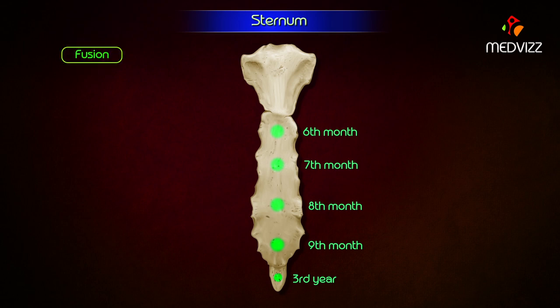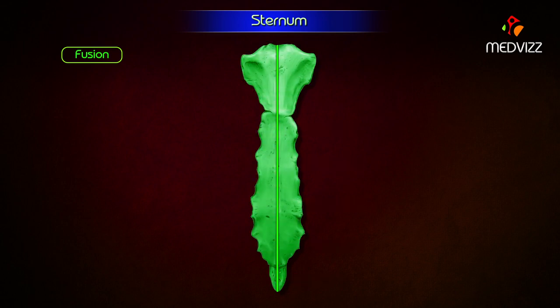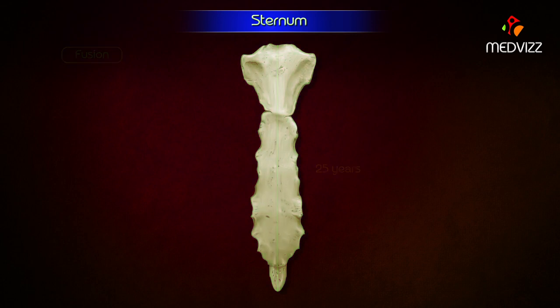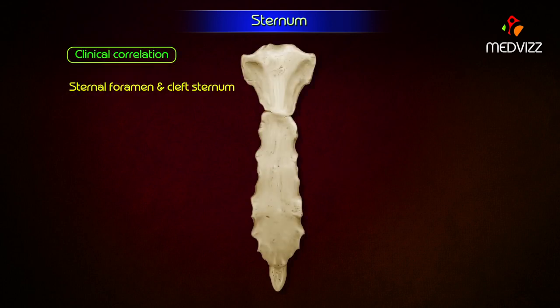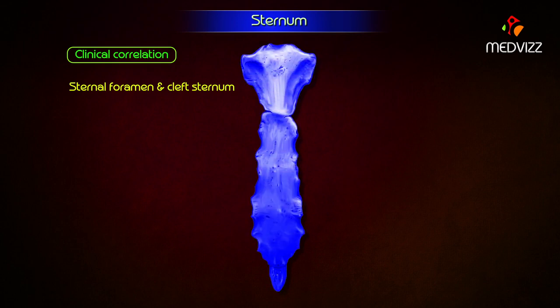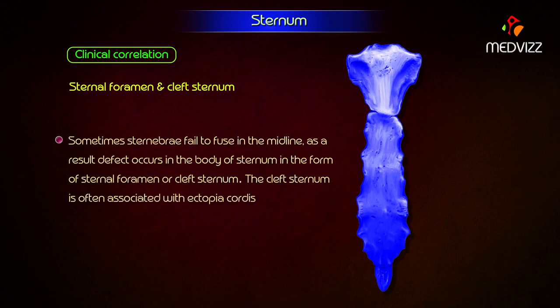Fusion. Fusion between the sternal plates takes place from below upwards, begins at puberty, and is completed by 25 years. Clinical correlation: sternal foramen and cleft sternum. The two sternal plates fuse in a caudocranial direction. Sometimes, sternebrae fail to fuse in the midline, and as a result, a defect occurs in the body of the sternum in the form of a sternal foramen or cleft sternum. Cleft sternum is often associated with ectopia cordis.